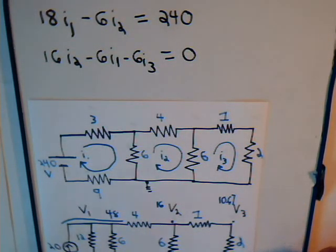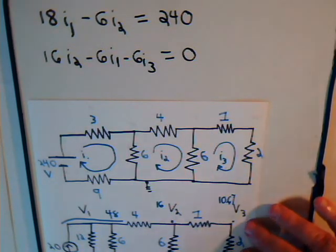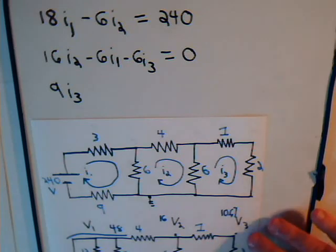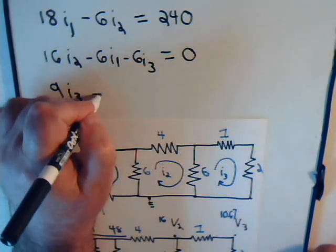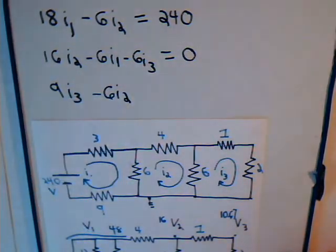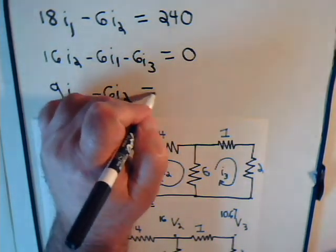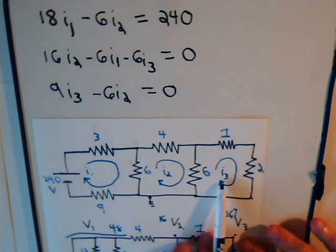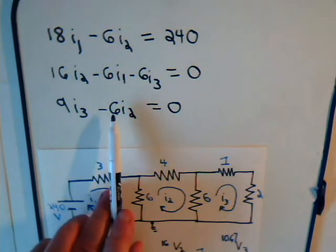For the third mesh equation, we have 6 plus 7 plus 9, which is 22, times I3, minus 6 times I2. There are no voltage sources present here, so that equals zero. So we have three mesh equations to solve for I1, I2, and I3 — three unknowns and three equations.